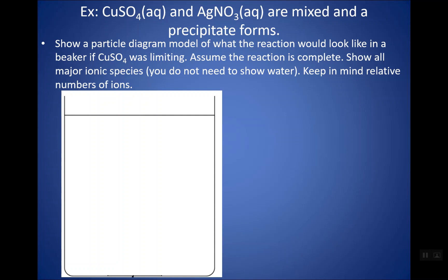Let's look at how you would draw a particle diagram for a precipitation reaction. You can see an example at the top. Copper sulfate and silver nitrate are reacting and a precipitate forms. We want to draw a particle diagram in the beaker.